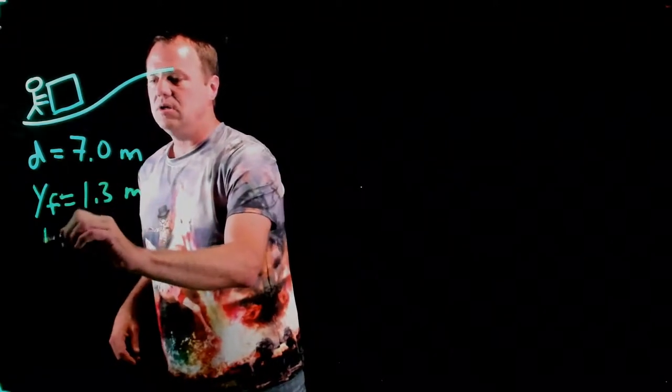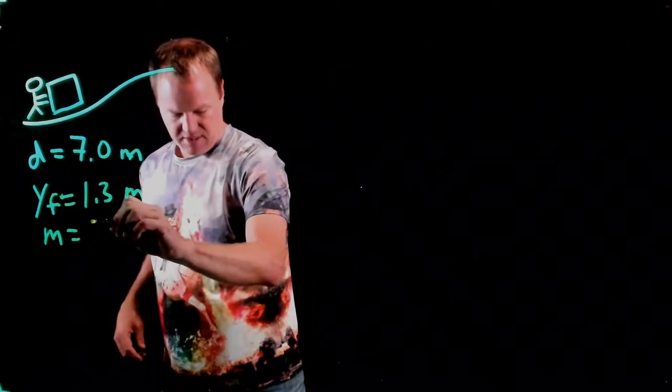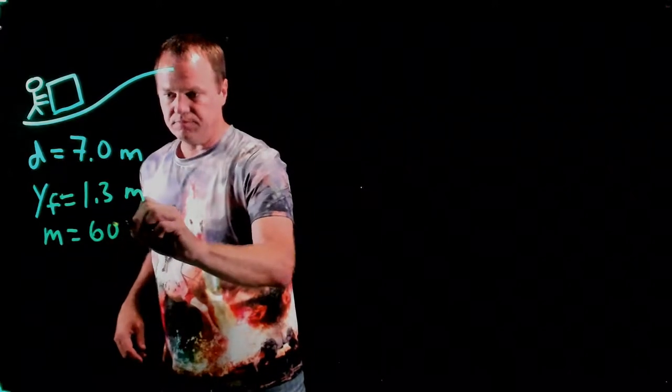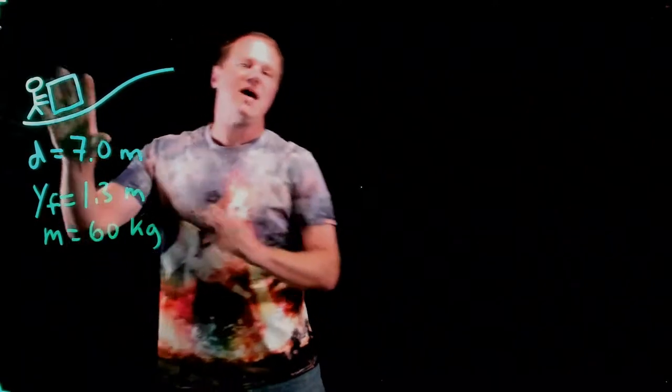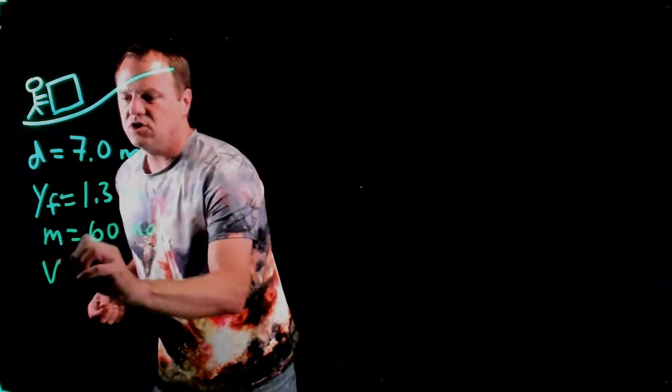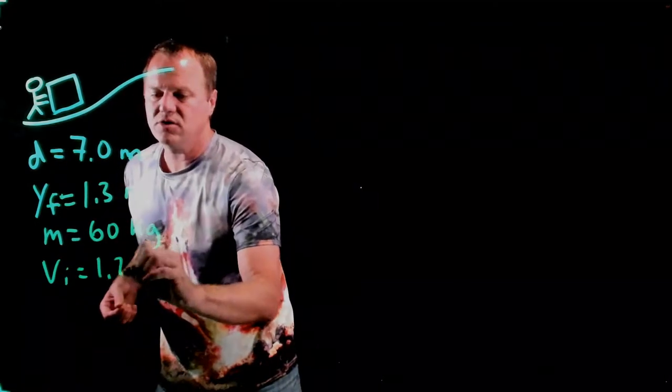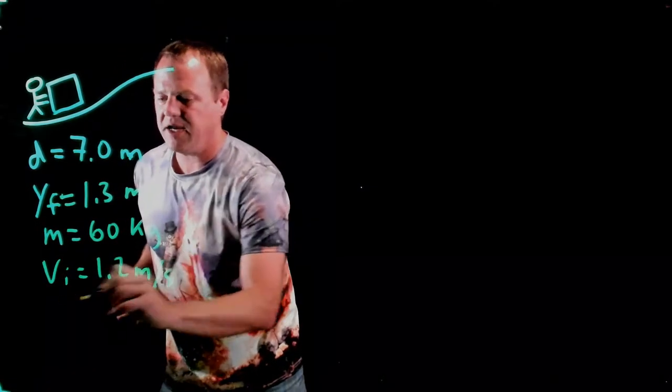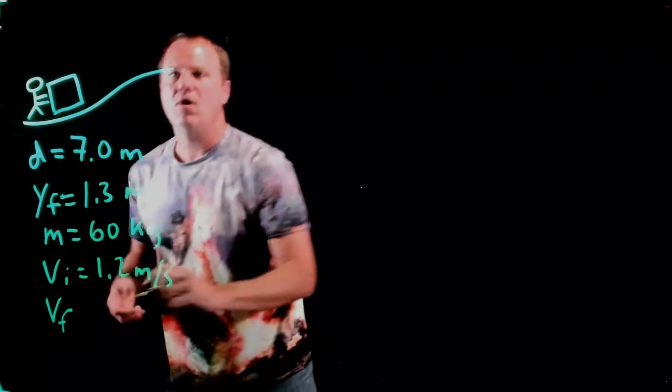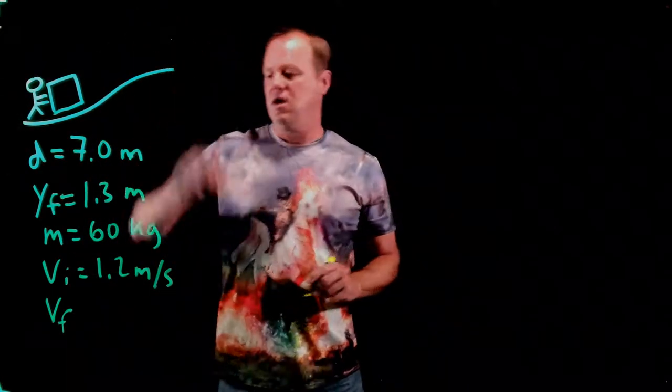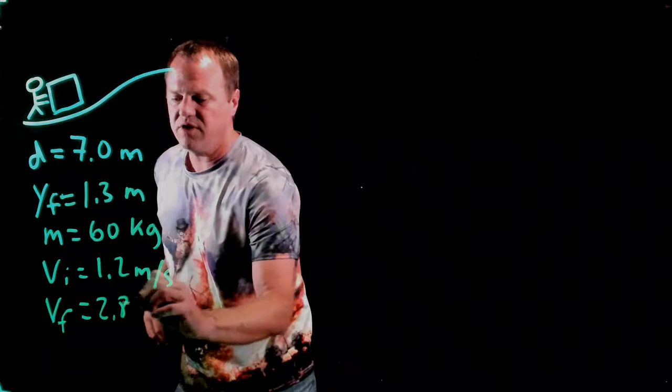Now, the mass of the block is 60 kilograms. And the block is actually already moving. It has an initial velocity of 1.2 meters per second. And then we want it to end up with a speed of 2.8 meters per second at the top of this ramp.